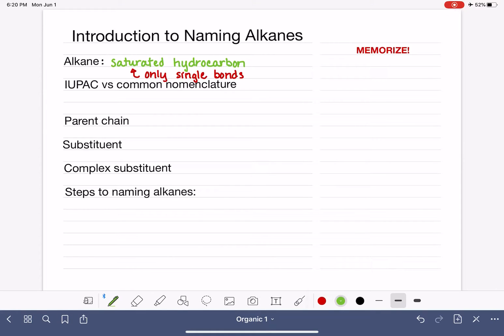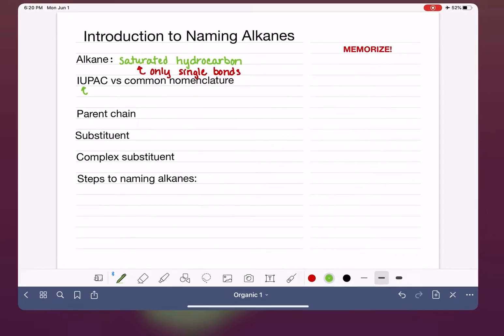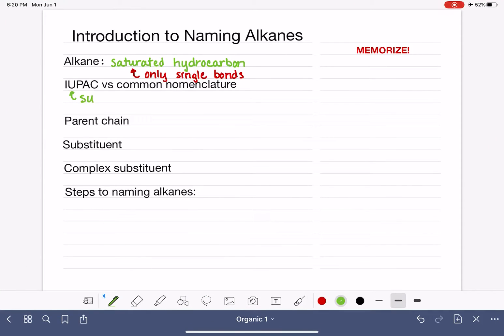The IUPAC method, IUPAC, first of all, stands for the International Union of Pure and Applied Chemistry. And one of the jobs of the IUPAC organization is coming up with a system or a method for naming molecules. So the IUPAC method of naming is a systematic or methodical process.